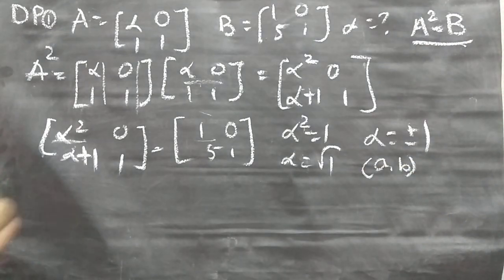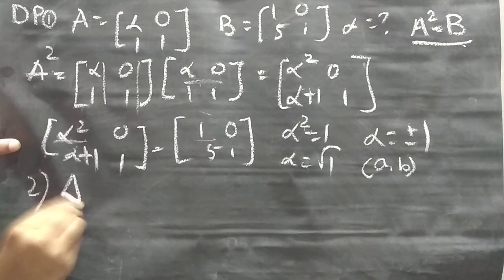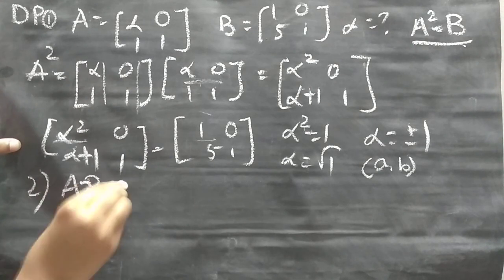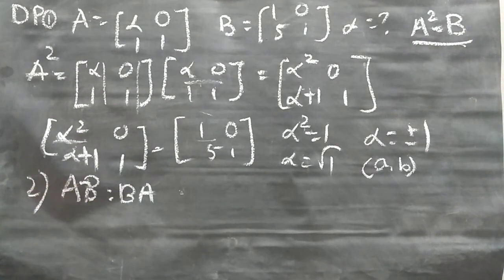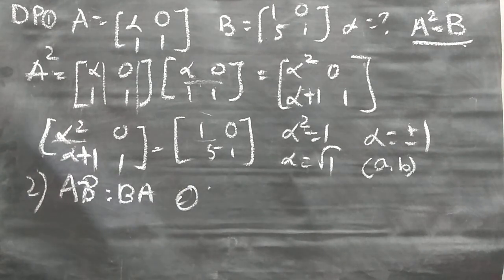Second diamond package question: the condition for the matrix equation A² − B² = (A−B)(A+B) is that AB = BA. As explained earlier with the commutative property example, you can take this as option C. Thanks for watching — do like, share and subscribe to Vishwa Vlog. In the next video we will be learning M3. Bye.